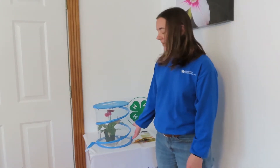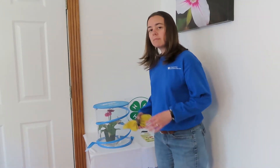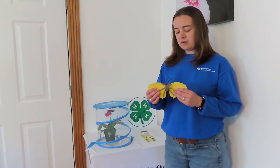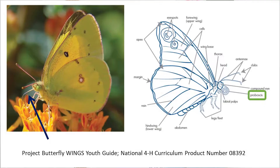Our butterflies drink nectar. You can see we have a cup in the bottom with some sugar water in it, and on our model here you can see the proboscis — that's how the butterfly drinks, using that to go down into the plant, into the bloom, and get the nectar.